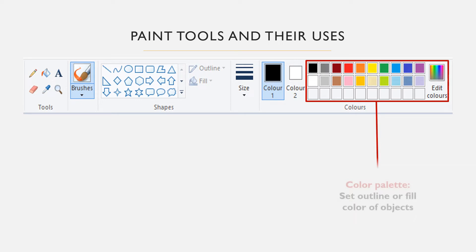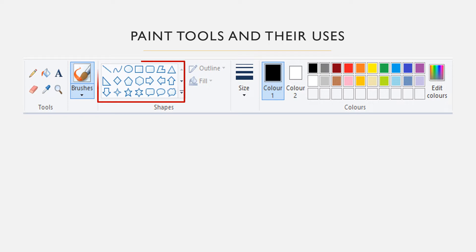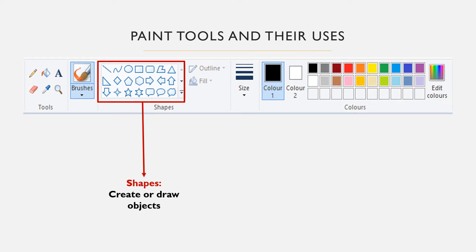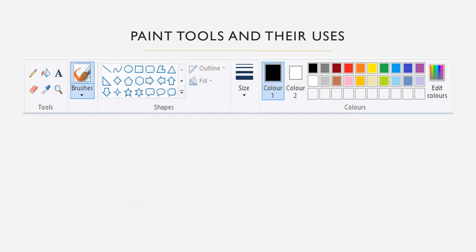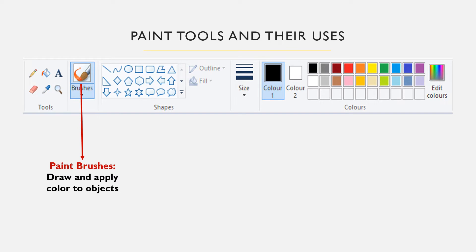The color palette is used to set the outline and the fill color of objects. You choose the color of your choice from the color palette to set the foreground or the background color of an object. Shapes is used to create an object — you can choose your desired shape to draw objects such as a line, an ellipse, a rectangle, a triangle, and so on. The paint brushes tool is used to apply color to an object. You can choose the brush to make paintings of different thickness and forms, depending on the particular brush you choose.